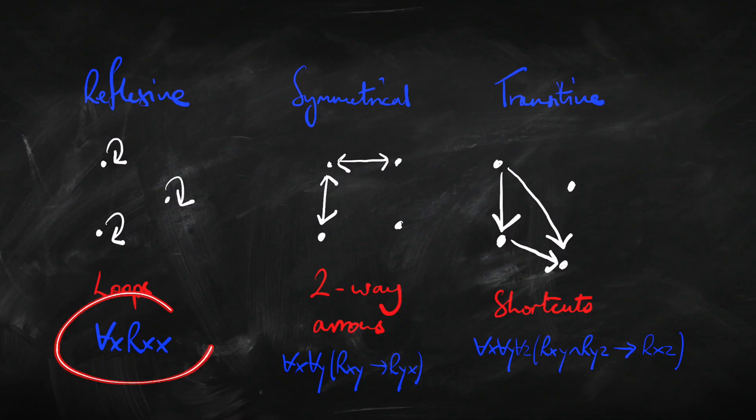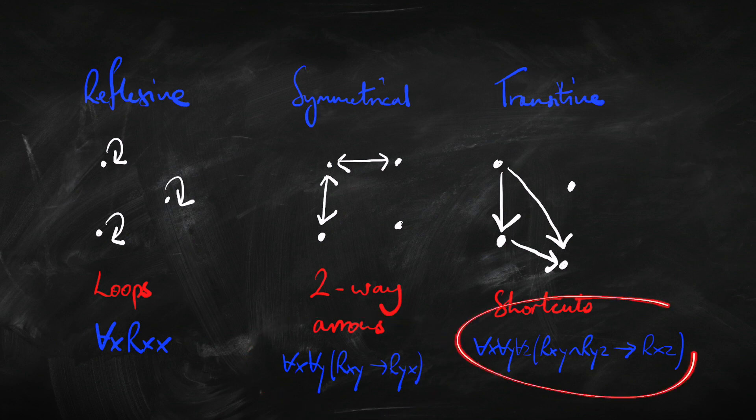We can express all of those relations in first order logic. Everything is related to itself — that is reflexivity. If X and Y are related, then Y and X are related — that's symmetry. And if X and Y are related, and Y and Z are related, then X and Z are related — that's transitivity.